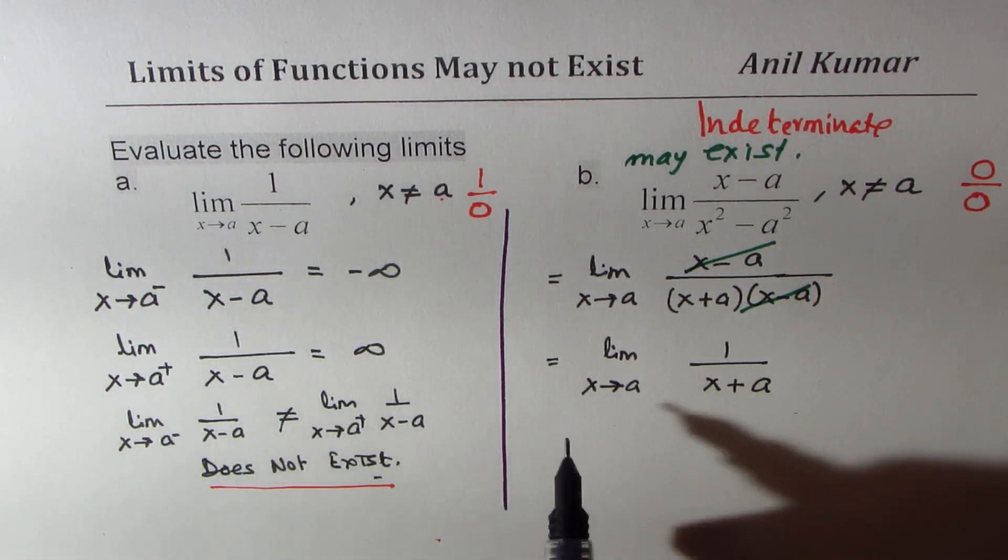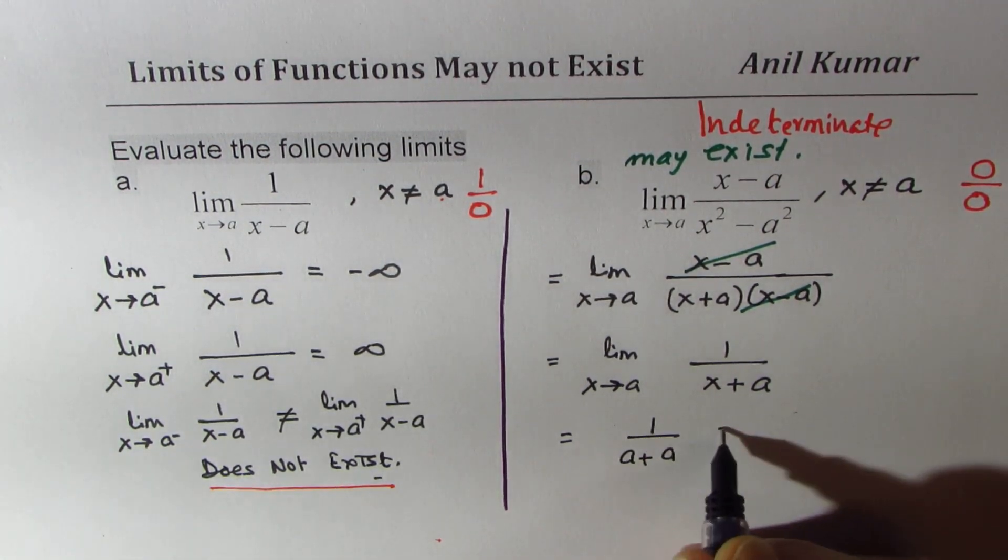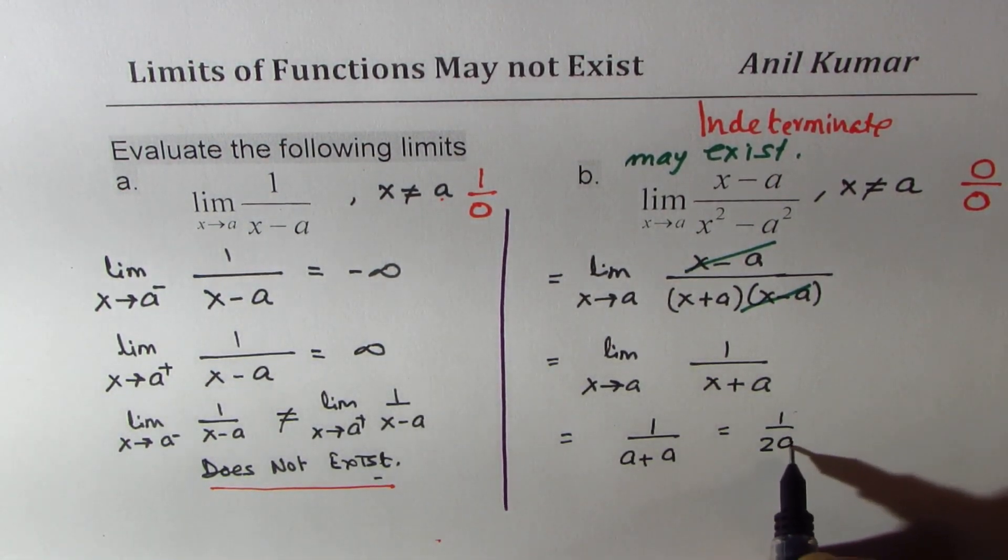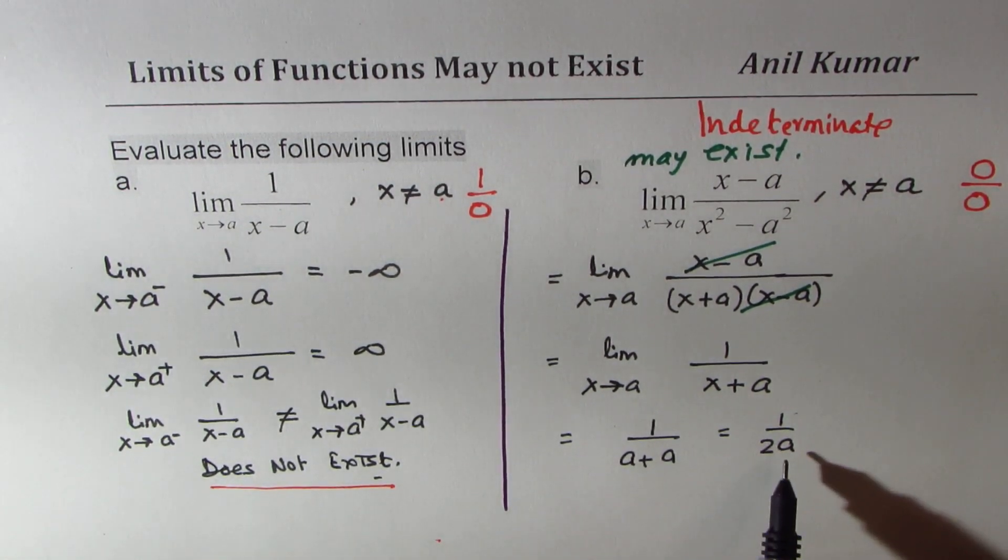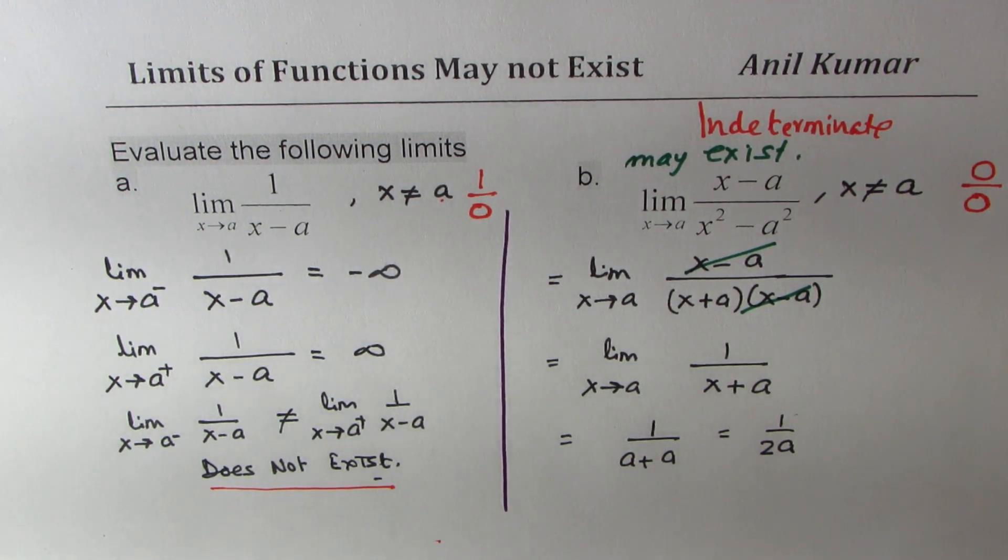Now if I substitute a, what do I get? I get 1 over a plus a, which is 1 over 2a, correct? So in this case, limit exists, and its value is 1 over 2a. You get the idea?